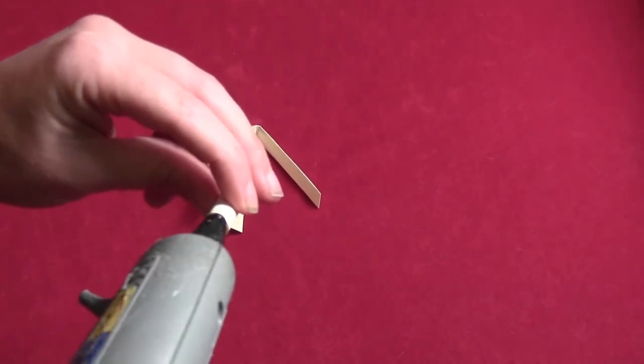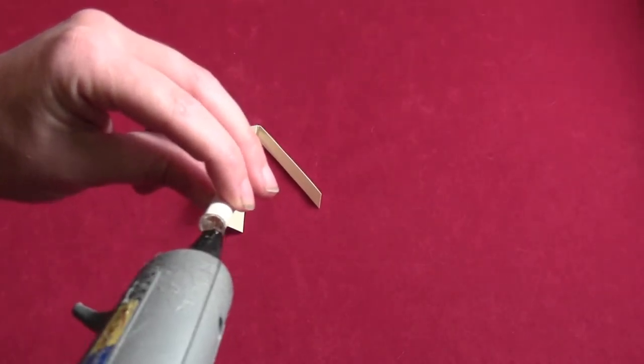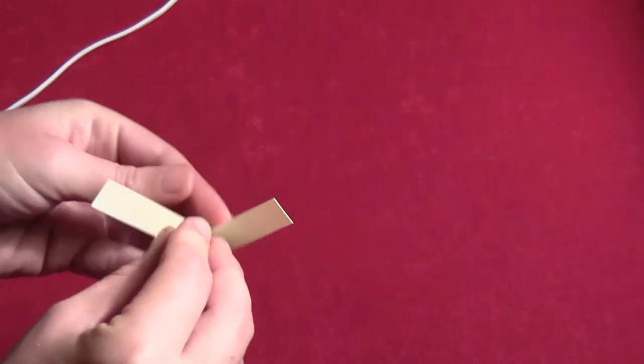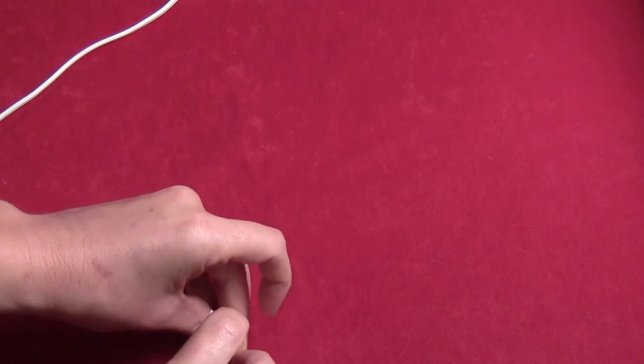So then you just want to hot glue that cylinder right into place, just like that. And this will be the base for your grappling hook.